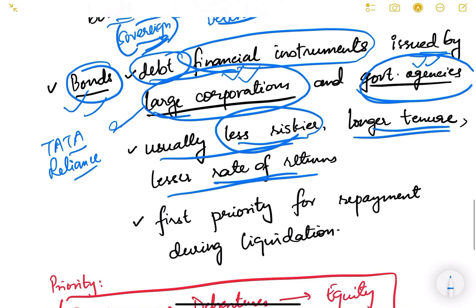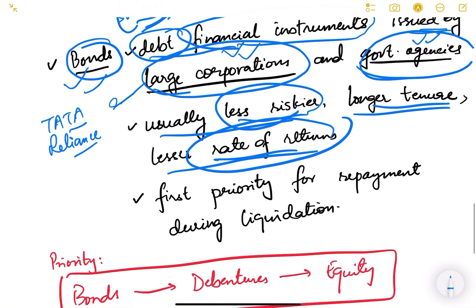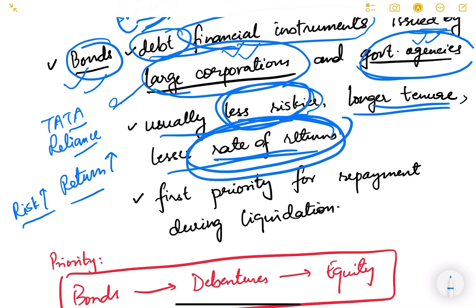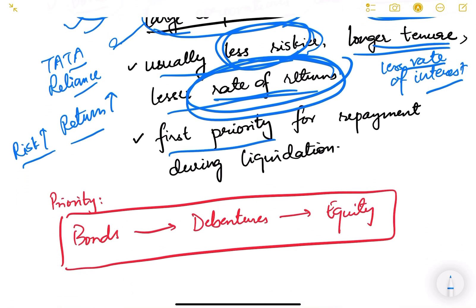There is a fundamental rule in finance: higher the risk, higher the return. If there is less risk, there will be less return — meaning a lower rate of interest. Return here means the rate of interest, the return you get on your investment.